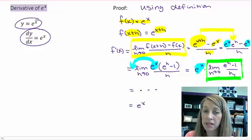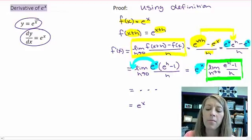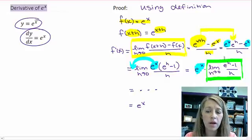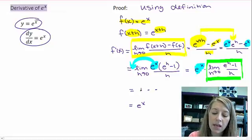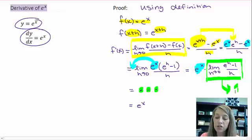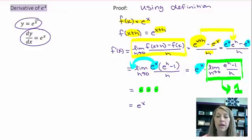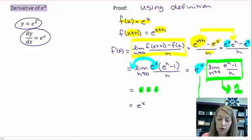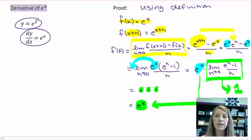If we plug in 0, we still can't evaluate it directly because that gives 0 in the denominator. Plugging 0 into the numerator gives e to the 0, which is 1, so we have 1 minus 1, or 0 over 0. That needs more work. I'm going to ask you to trust me that this limit converges to 1 — it uses properties we don't fully understand at this point. Since it converges to 1, the derivative of e to the x is just e to the x.